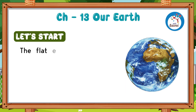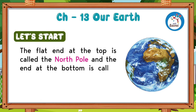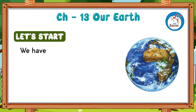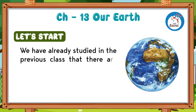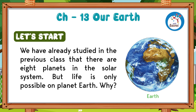The flat end at the top is called the North Pole and the end at the bottom is called the South Pole. We have already studied in the previous class that there are eight planets in the solar system, but life is only possible on planet Earth.